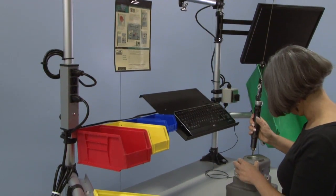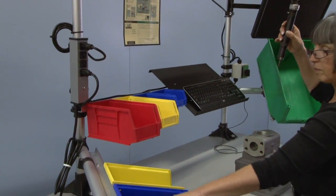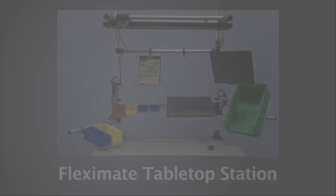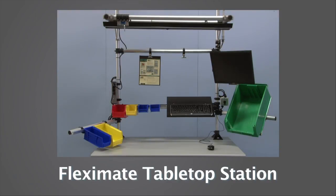Available in standard 4, 5, or 6 foot versions, standing height or sitting, and ESD, the Fleximate tabletop station can be fitted to any station.